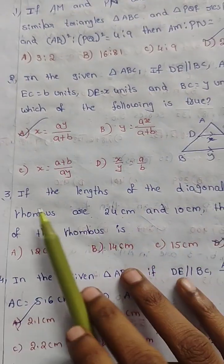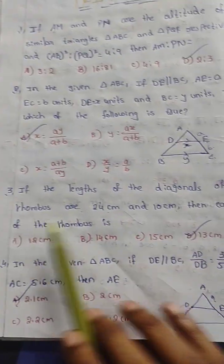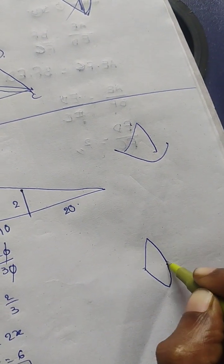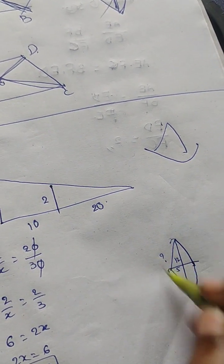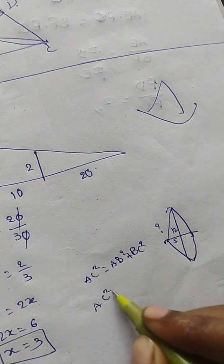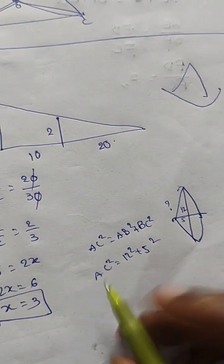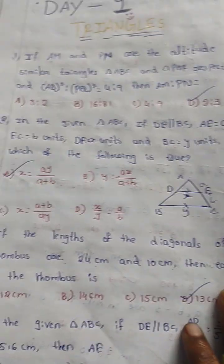Next question: if the lengths of the diagonals of a rhombus are 24 cm and 20 cm, then find each side of the rhombus. Half of each diagonal gives 12 and 10 — wait, sorry — 12 and 5. Using the Pythagorean theorem: side² = 12² + 5² = 144 + 25 = 169, so side = 13. Therefore each side of the rhombus is 13 cm, and option D, 13, is the correct answer.